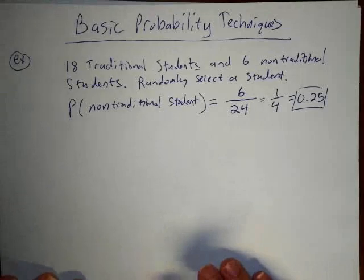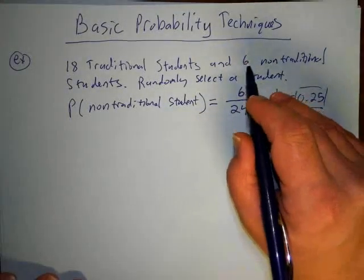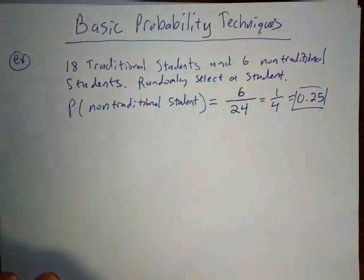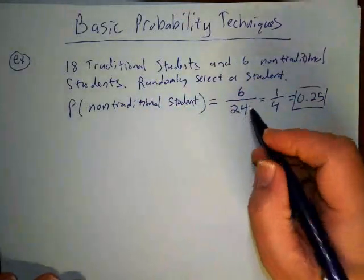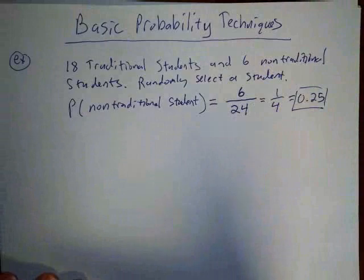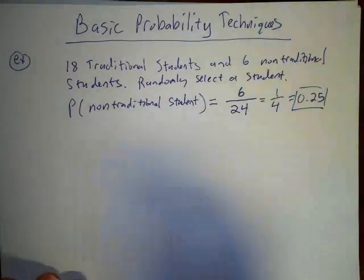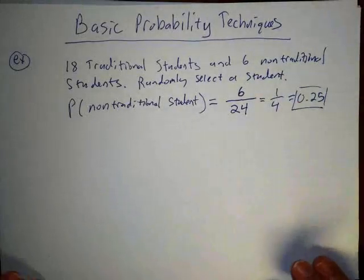The point here is it's not always just taking the small number and dividing by the large number — you have to think about what's going on. The bottom number is the total number of outcomes of the experiment, and the top number is the number of outcomes contained in the event you want to find the probability of.